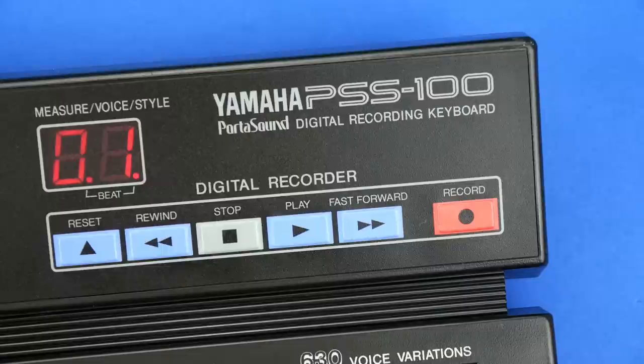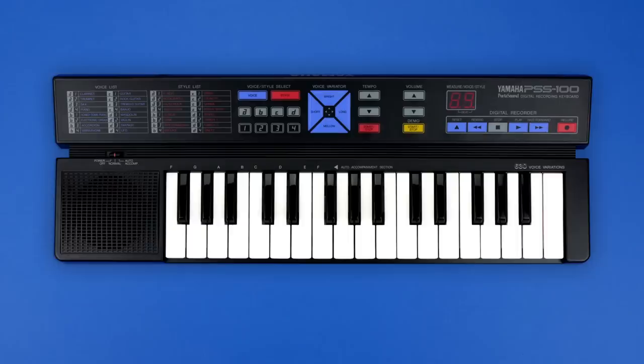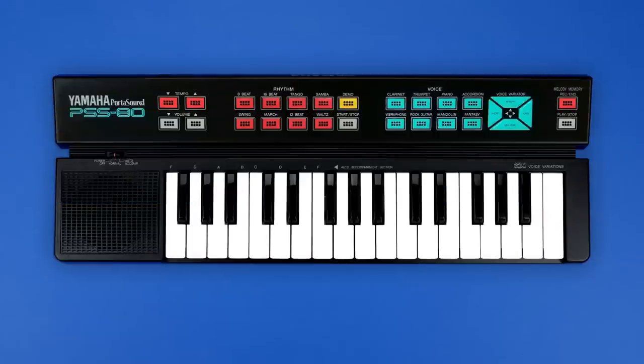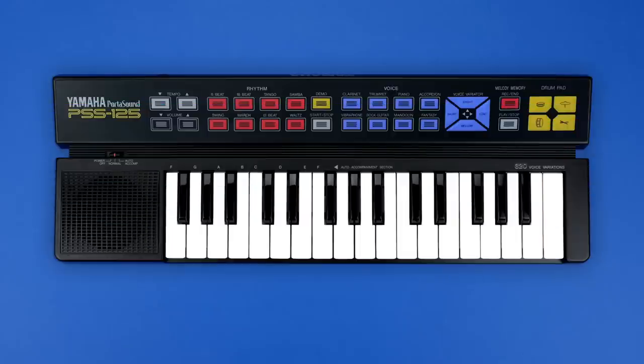The main feature is a digital recorder. It came out in 1989 together with two very similar but a bit simpler models. The PSS-80 has also a voice variator and 6-note polyphony, but only 8 instruments and rhythms, a different demo tune and a simple melody recorder.